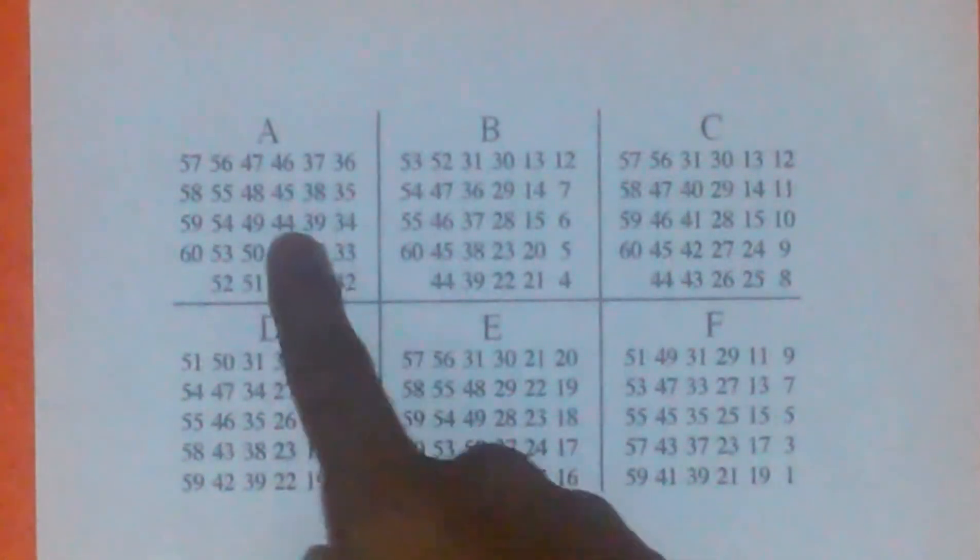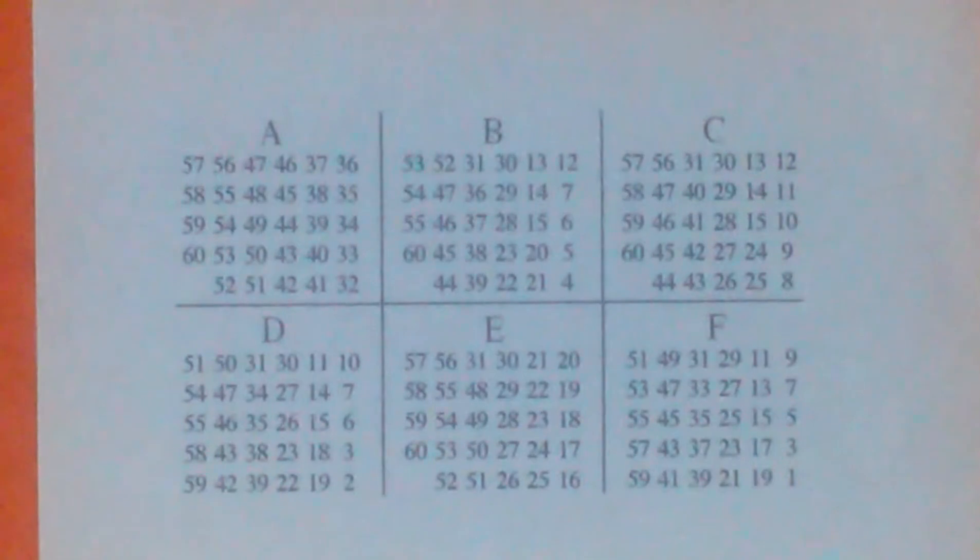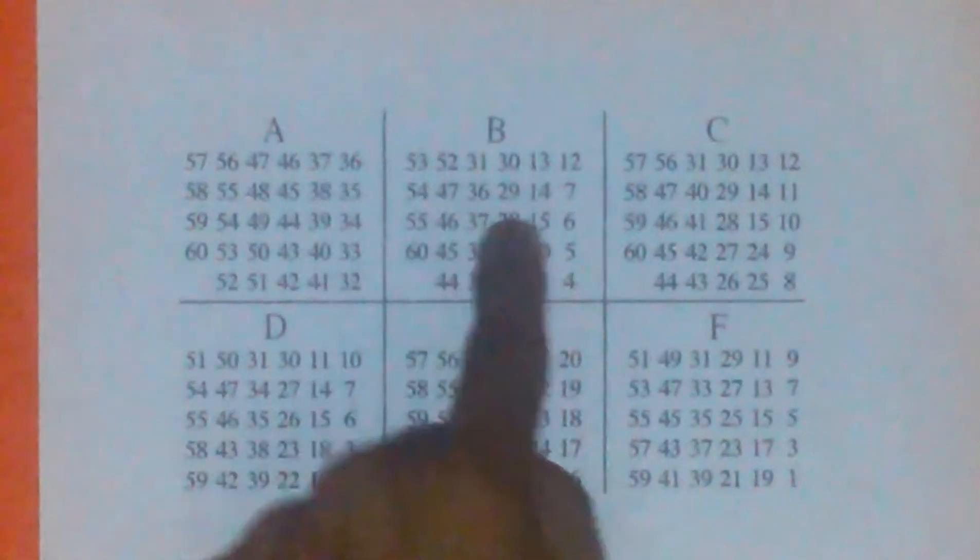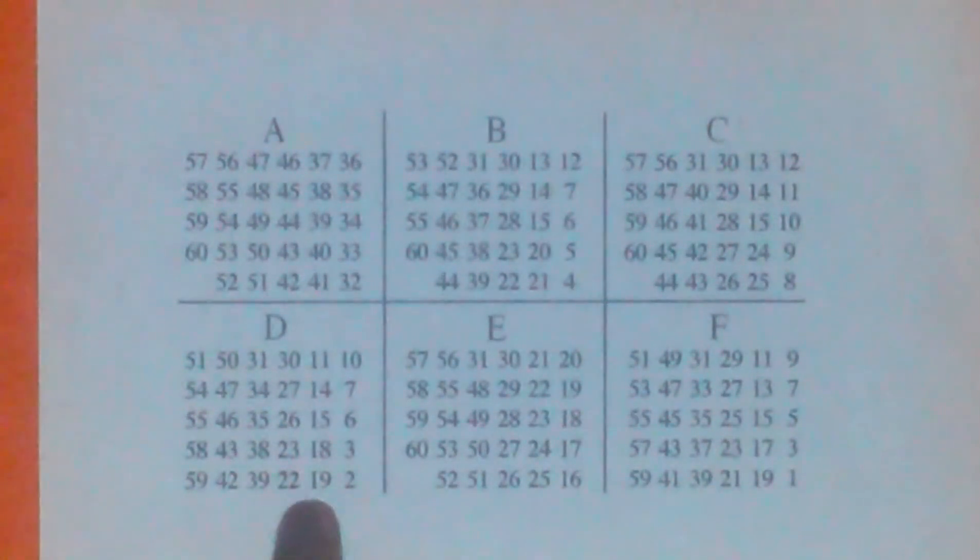Let's try one more number. Say they choose 39. 39 is in A, B, and D, and is it in here? No, it's in F as well. So they say A, B, D, and F.